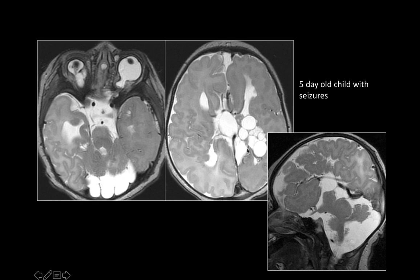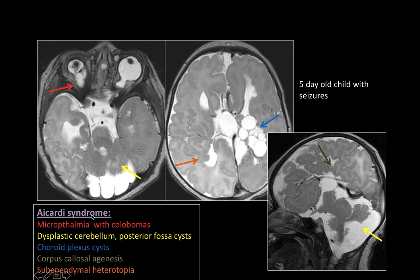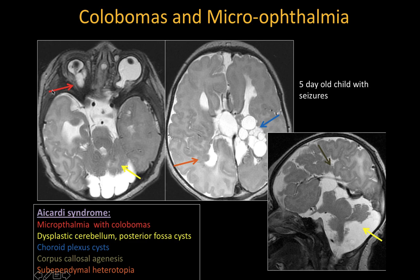There is complete absence of the corpus callosum, multiple choroid plexus cysts, and gray matter heterotopia seen in the periventricular region bilaterally — along the left frontal horn and along the right occipital horn. This constellation of findings is seen in Aicardi syndrome: microophthalmia with coloboma, dysplastic cerebellum with posterior fossa cyst, choroid plexus cysts, corpus callosum agenesis, and subependymal heterotopia. Coloboma results from incomplete closure of the embryonic fissure.